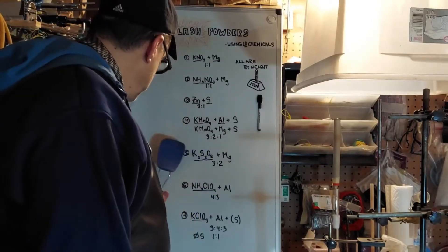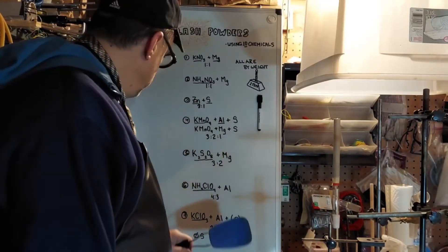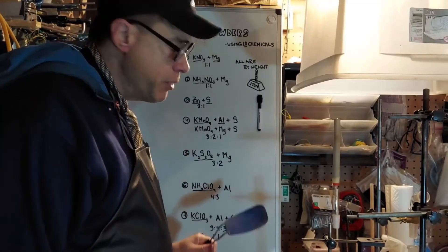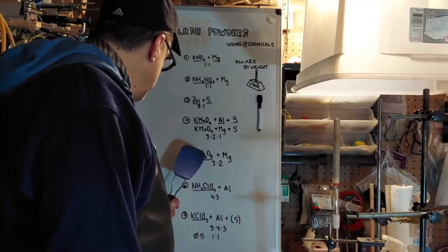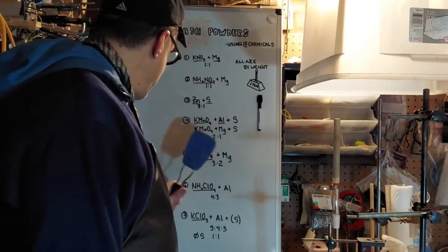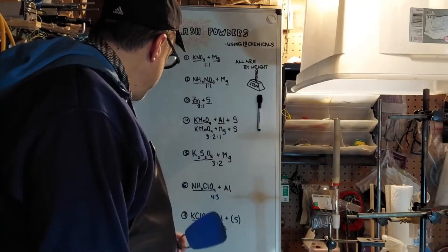Next we got potassium per sulfate, and there's that magnesium again, it's common. And you want that in a three to two ratio. Three parts potassium per sulfate, two parts magnesium.